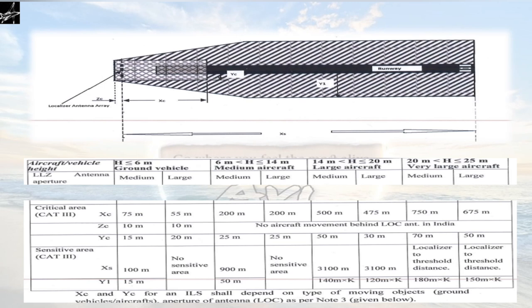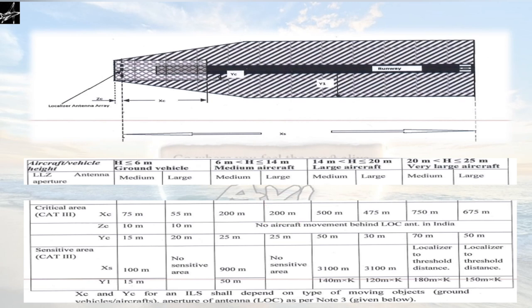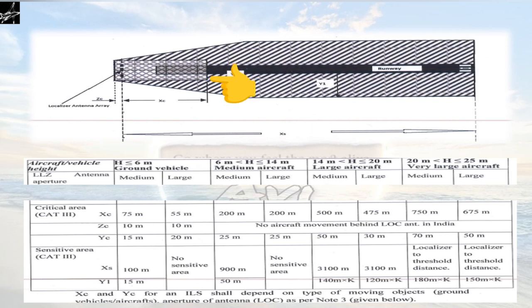Moving to the next column, which defines medium aircraft with tail height greater than 6 meters but less than or equal to 14 meters: XC increases to 200 meters and remains 200 meters for a large aperture antenna as well. For ZC, in India no aircraft movement is permitted behind the localizer antenna, whereas in foreign countries this area is defined. YC on both sides of the runway centerline is 25 meters for both medium and large aperture.